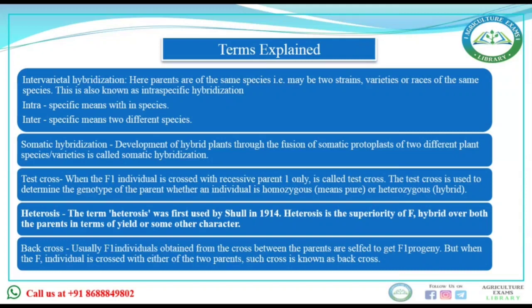When you talk about the test cross and back cross: when one dominant parent and one recessive parent cross, F1 is produced, which is also of dominant nature. When F1 is crossed with either parent — dominant or recessive — that is known as back cross. If it is crossed with the recessive one, that is test cross. If crossed with the dominant parent, that is out cross. Test cross is done to know the genotype composition of the parents.